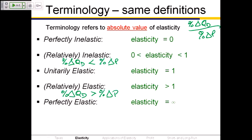Elasticity equal to zero means the percentage change in quantity demanded is zero. So regardless of what happens to the price, there's no change in quantity demanded.